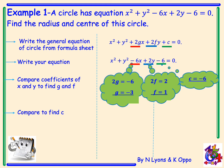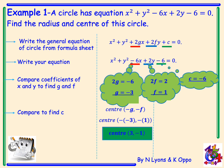From there we can obtain our centre. The centre is negative g, negative f. So if g is minus 3, our centre will have an x coordinate of positive 3. And if f is 1, our centre will have a y coordinate of negative 1. So our centre is (3, -1).